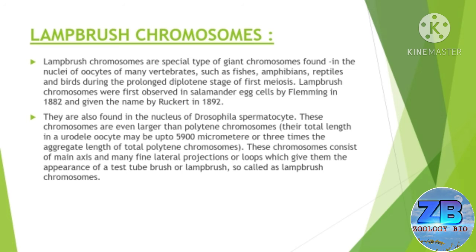The name was given by Rückert in the year 1892. They are also found in the nucleus of Drosophila spermatocytes. These chromosomes are even larger than polytenic chromosomes. Their total length in oocytes may be up to 5900 micrometers, or three times the aggregate length of total polytenic chromosomes.